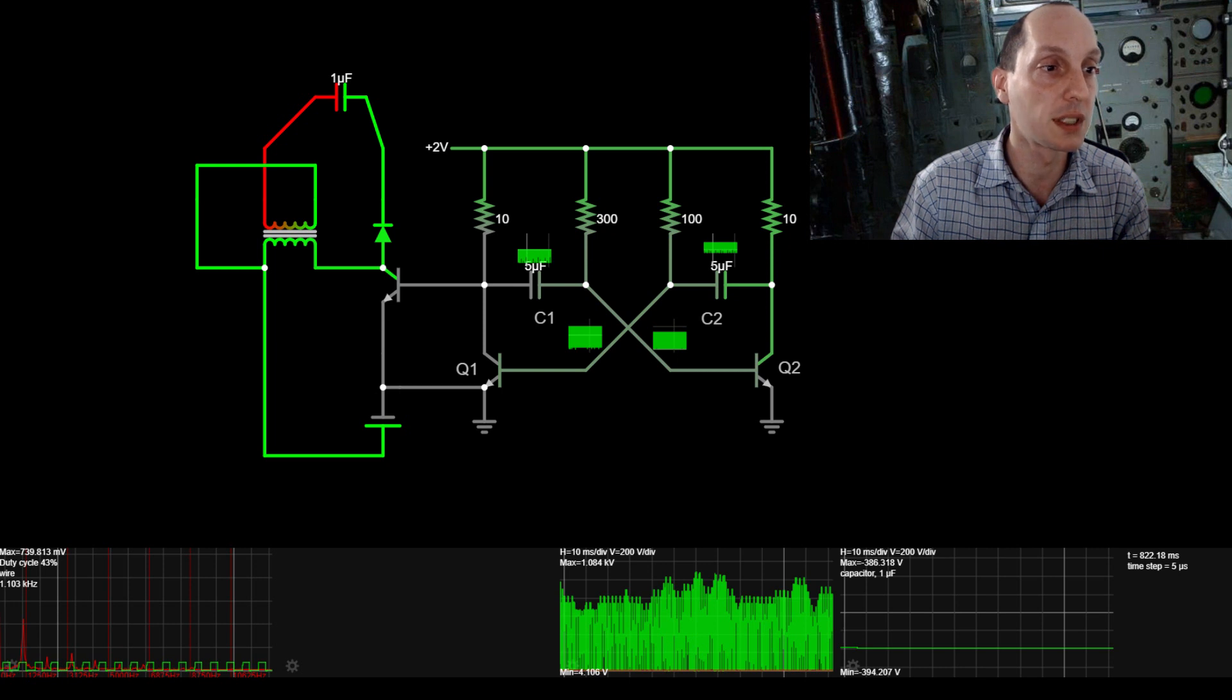So on the primary side what we're doing is we're taking the inductive kickback and creating a feedback loop. Now what happens is the inductive kickback goes into the secondary and feeds back into the primary, and when I remove that one microfarad capacitor it'll just ramp up, and in the simulation at around 4kV it just errors out. But that's what it does.